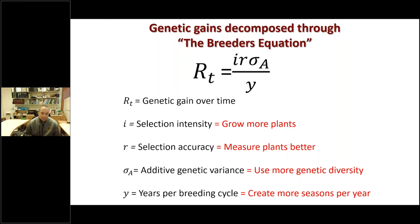The reason a lot of plant breeding programs are looking at high throughput phenotyping and UAS really has to do with the breeder's equation — looking at genetic gain over time. We want to increase the genetic gain for different traits, like final grain yield. We do that by increasing selection intensity, which means growing more plants; increasing selection accuracy, which means measuring plants better; increasing additive genetic variants; or decreasing the years per breeding cycle — essentially creating more seasons per year. All of those will increase our rate of genetic gain.